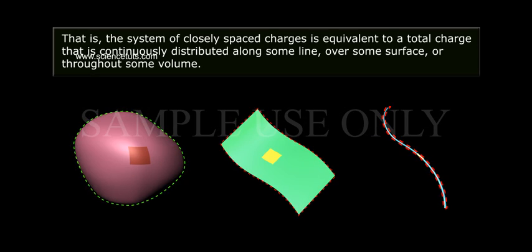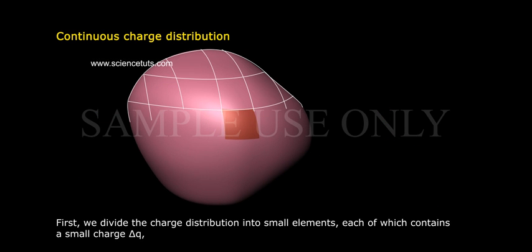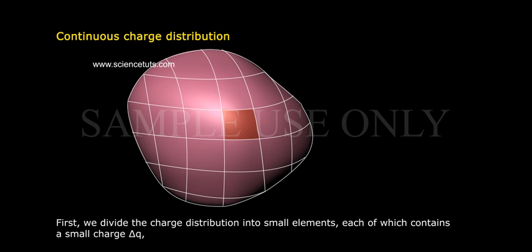That is, the system of closely spaced charges is equivalent to a total charge that is continuously distributed along some line, over some surface, or throughout some volume. First, we divide the charge distribution into small elements, each of which contains a small charge delta q as shown in figure.